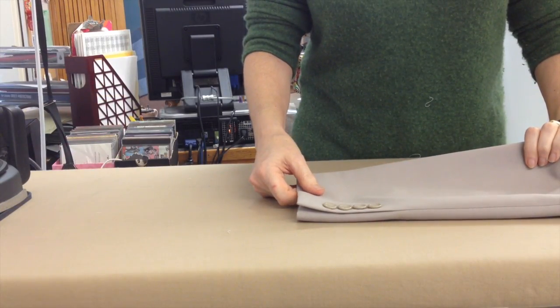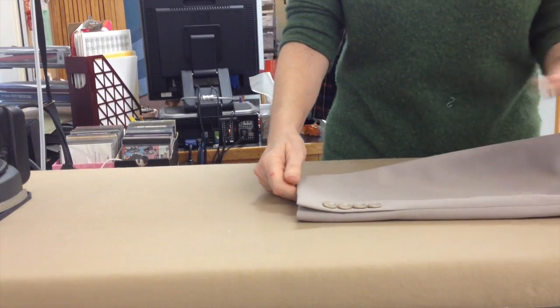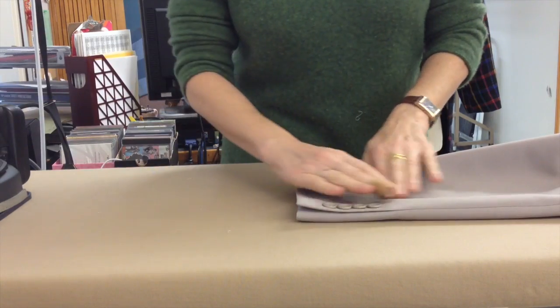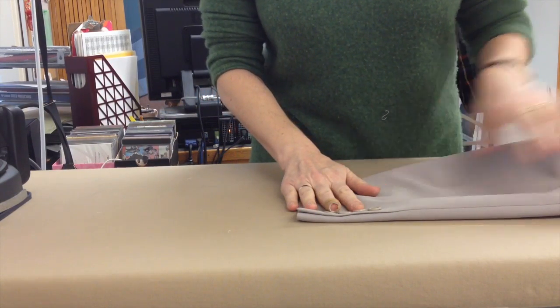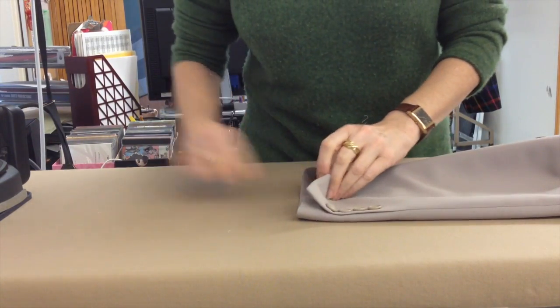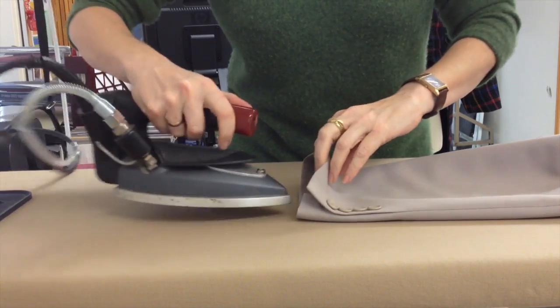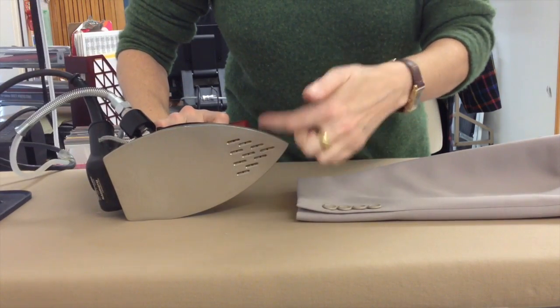Sometimes when you're ironing, you have to get into a tight spot, and you think, how am I going to do that? Let's say I just shortened this jacket sleeve, and now I want to give that a nice final crease. You only have to use the tip of your iron, that's where the steam comes from anyway.